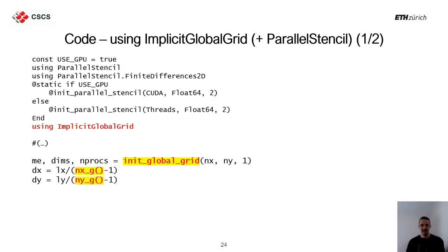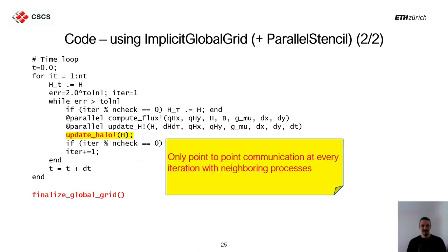Let me show how to apply ImplicitGlobalGrid to the glacier flow to make it multi-GPU. We start by initializing the global grid, passing it the size of the local grid nx and ny, and then the global grid size is retrieved as nx_g and ny_g. In the main part of the code, inside the sub-iteration time loop, we add `update_halo!`. At the very end, we add `finalize_global_grid`, and that's all.